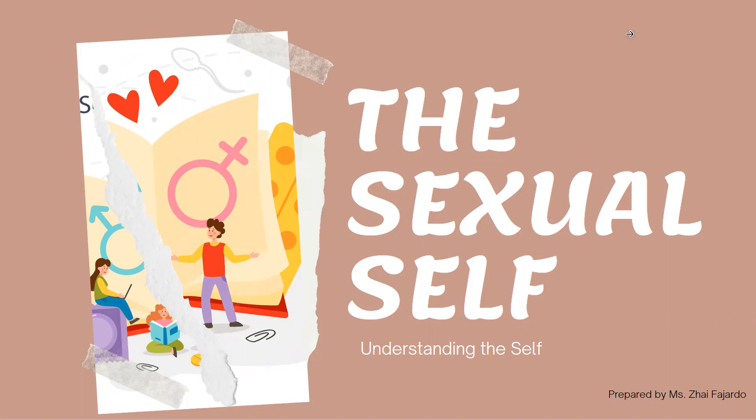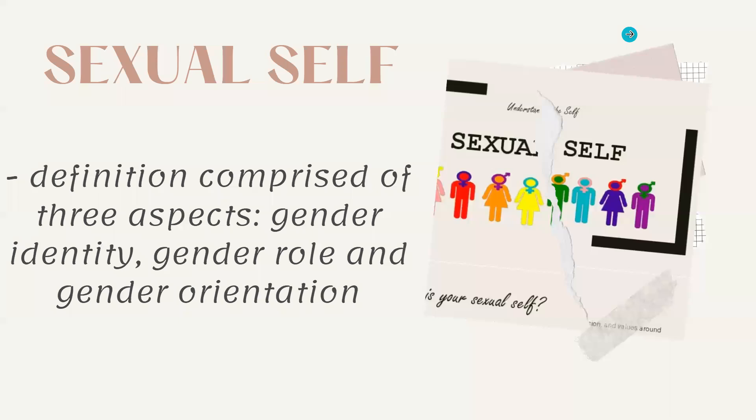So, what is sexual self? The sexual self is defined as comprising three aspects, which are gender identity, gender role, and gender orientation.